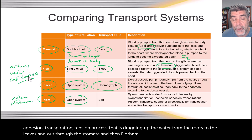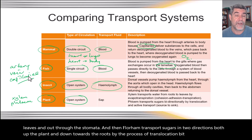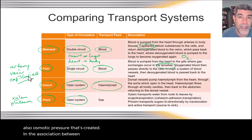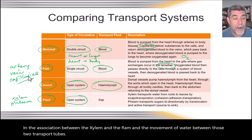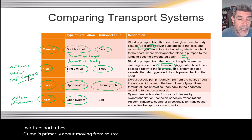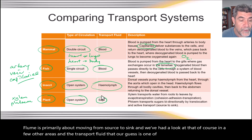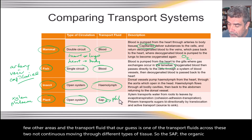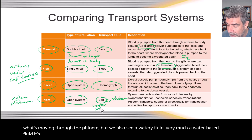Phloem transports sugars in two directions — both up the plant and down towards the roots — by the process of translocation, involving active transport and osmotic pressure created by the association between the xylem and the phloem and the movement of water between those two transport tubes. Phloem is primarily about moving from source to sink. The transport fluid moving through the phloem is sap — the organic material — while a watery, salt-based fluid moves through the xylem.